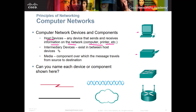An intermediary device exists in between host devices. If you're talking about a switch or a router, it's not necessarily a host device because it's not sending any information — it's receiving information and then forwarding it on. So it's called an intermediary device. Then we have media, and the media is the component over which the message travels from source to destination. That can be copper cabling, fiber optic lines, or a wireless connection.